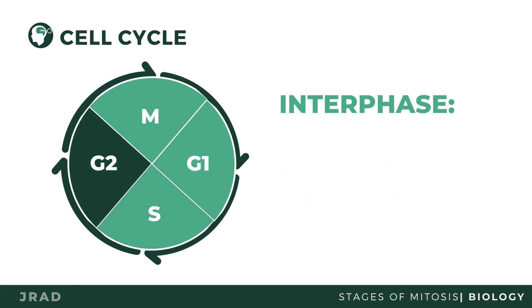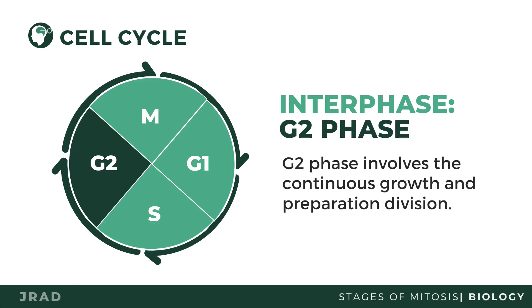During the G2 phase, the cell continues to grow and prepare for cell division by producing proteins important for chromosome and mitotic spindle formation.